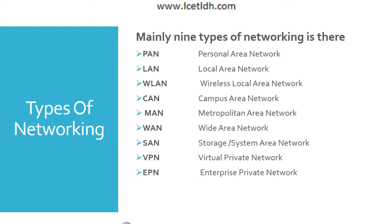Next we have the Campus Area Network (CAN). A campus area network is larger than a LAN but smaller than a Metropolitan Area Network. These types of networks are typically seen in universities, schools, districts, or small businesses, and can be spread across several buildings that are fairly close to each other so users can share resources.